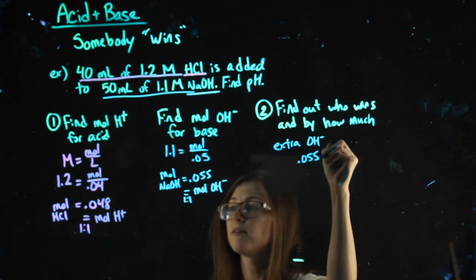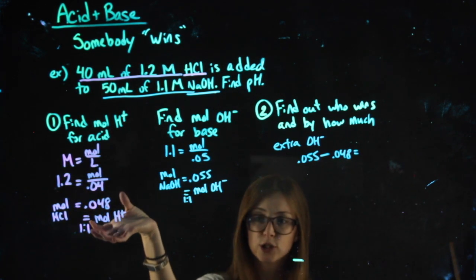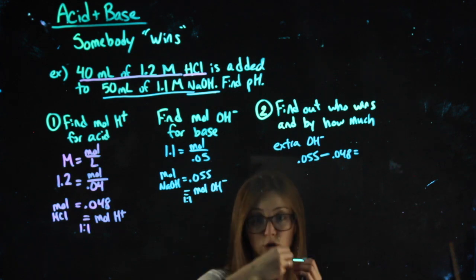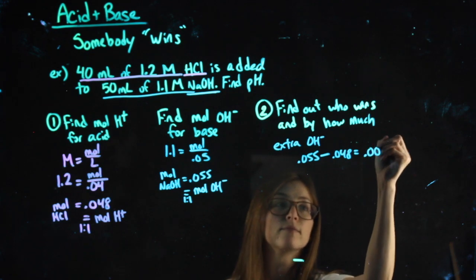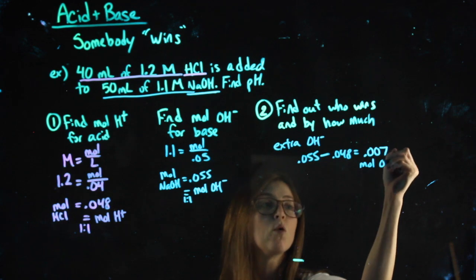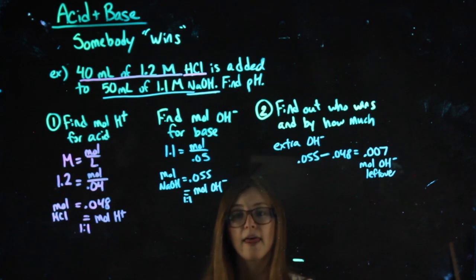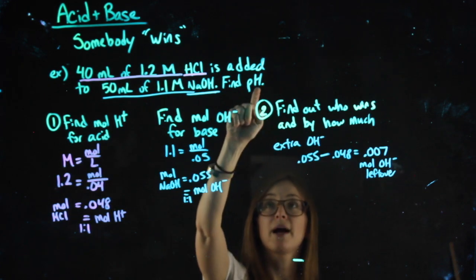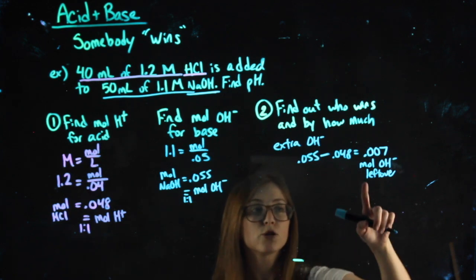How much? 0.055 minus the 0.048, right? Because for all of this H+, it's going to bond with OH as much as it can and neutralize. So finding the difference between the two, we get 0.007. And since it was OH that we had extra of, this is 0.007 moles of OH left. That means I know my answer by the time I'm done should be above 7. So this is my moles of OH.